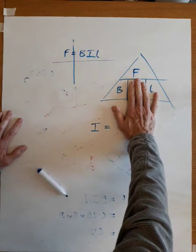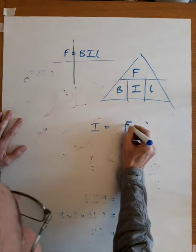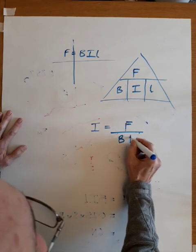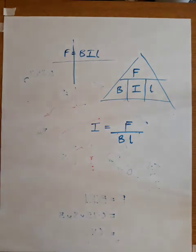And you've got F on top, and B and L underneath. So F on top, B and L underneath. So I'll leave that with you. Carry on with your handout.